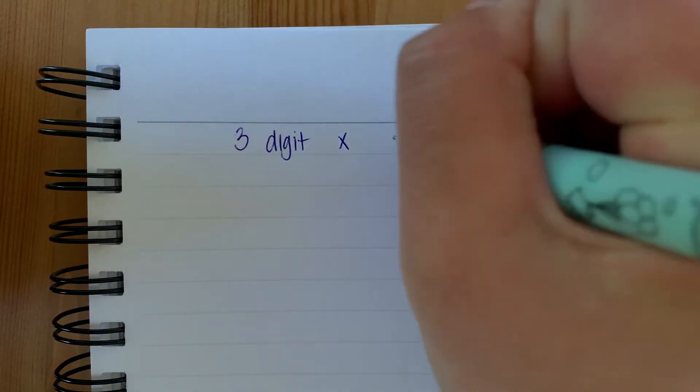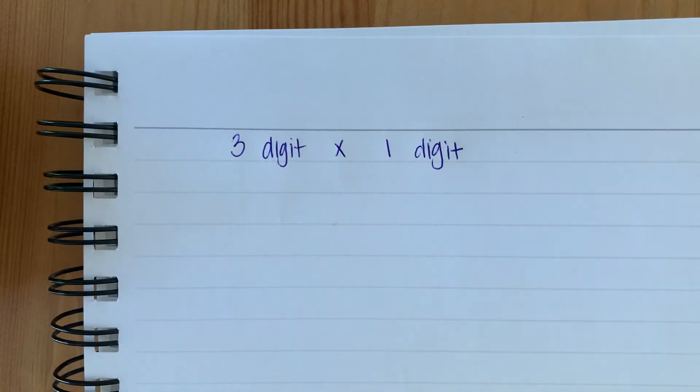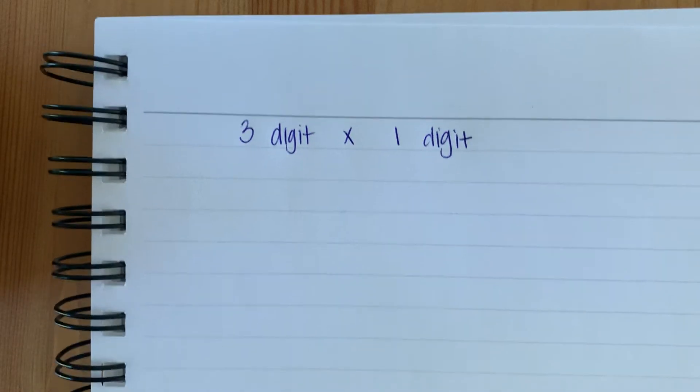Hey fourth graders, so this week we are going to practice three digit multiplied by one digit. Last week or a couple weeks ago you practiced multiplying two digits with one digit. This week we're going to do three digit numbers, a number with three numbers, multiplied by one digit. All right, so let's practice together.